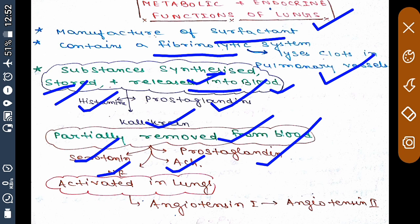Some substances are also activated in the lungs. Specifically, angiotensin 1 is converted into angiotensin 2 by the enzyme known as angiotensin-converting enzyme (ACE).